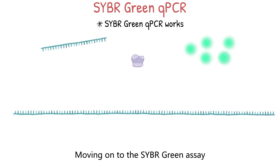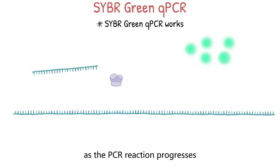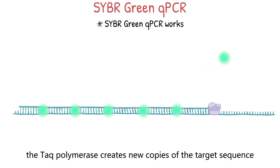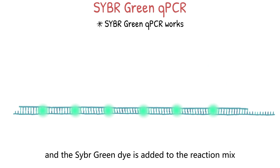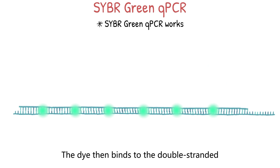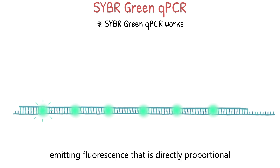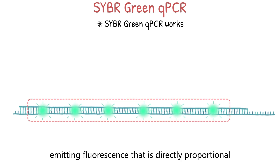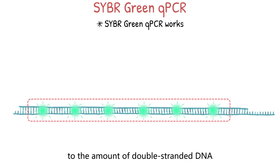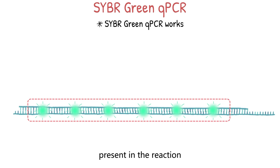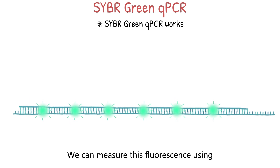In the CyberGreen assay, as the PCR reaction progresses, the Taq polymerase creates new copies of the target sequence and the CyberGreen dye is added to the reaction mix. The dye then binds to the double-stranded DNA products generated, emitting fluorescence directly proportional to the amount of double-stranded DNA present in the reaction. We can measure this fluorescence using a fluorescent plate reader.